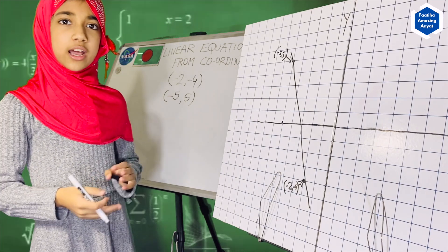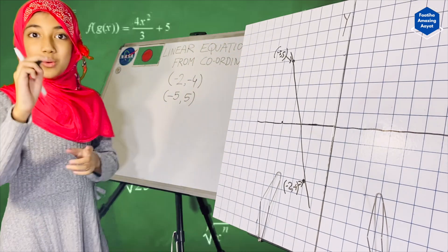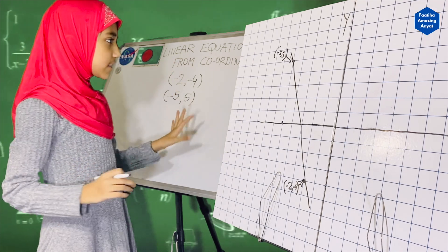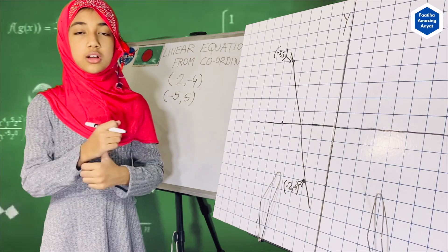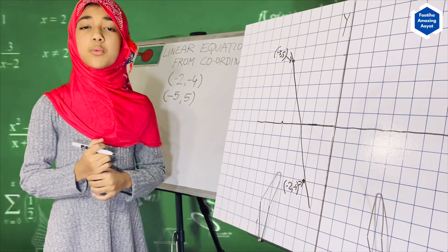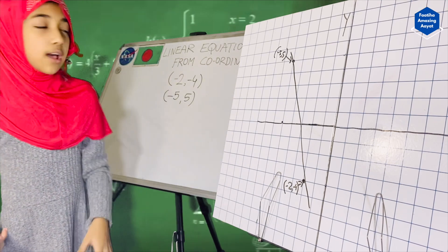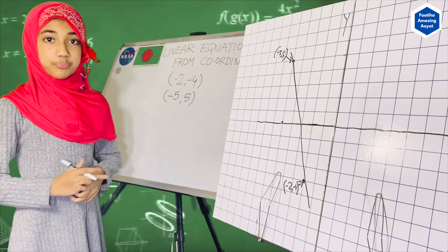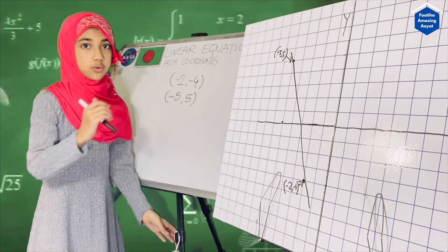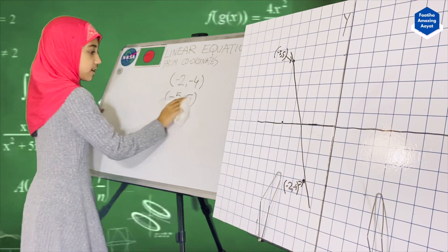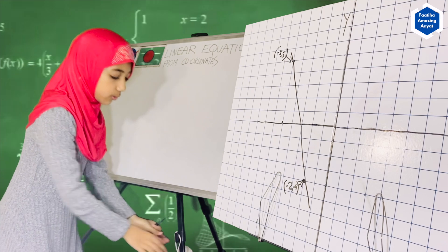Remember I told you I'm going to show you how to figure out equations from these two sets of coordinates? In that equation, there are actually three types of equations that we can do. One is called slope-intercept form. Another one is called point-slope form. And the third one is standard form. Today I'm going to show you all of them using these two coordinates.